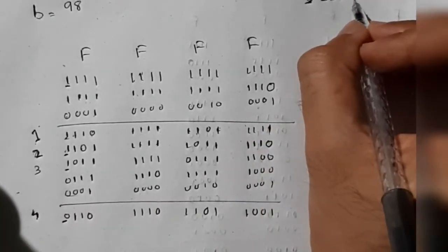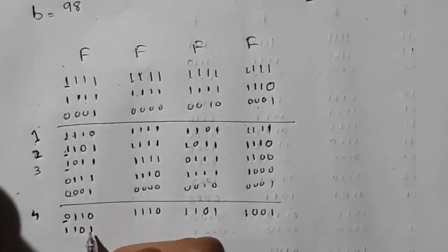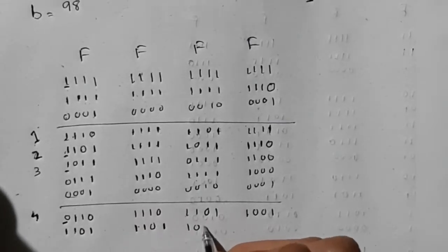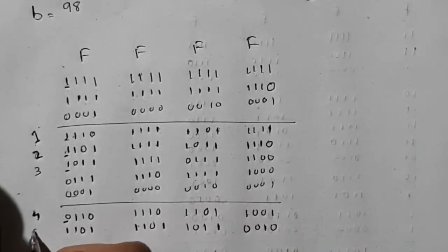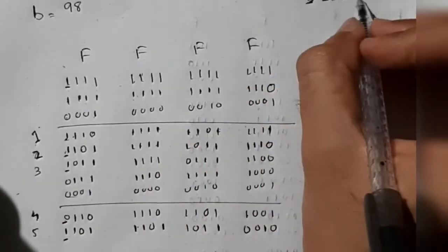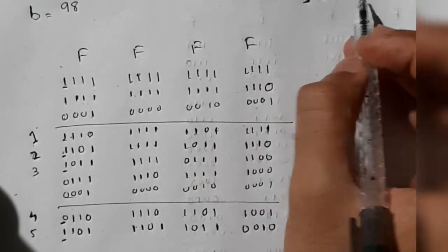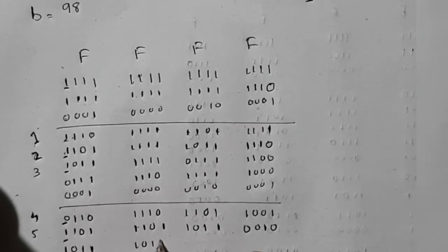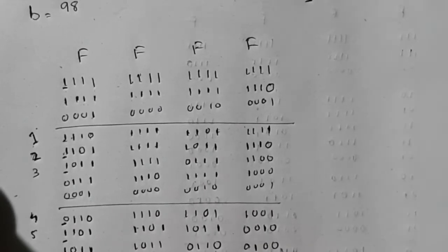For the fifth bit, comparing the bits: they are the same, so we do only the left shift operation. We get the result for the fifth iteration. For the sixth bit, comparing: it's 1 and 0 — they are different. So we perform the left shift first, then follow up with the XOR operation.